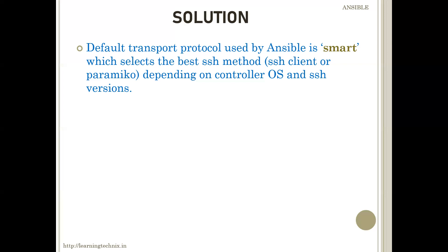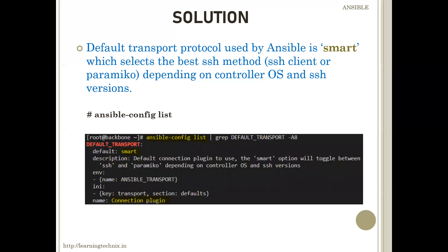Now how will you check that? If you execute the ansible-config list command on your machine with some filters, it would display exactly which connection or which default transportation protocol is selected. In this manner you would notice that the default one is smart.